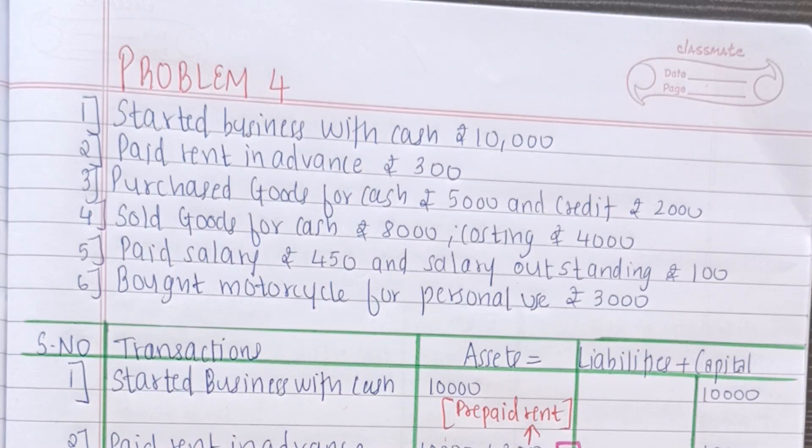Before this I have solved three problems. So this problem is quite different from the ones I have solved previously. Let's begin. The first transaction is started business with cash 10,000. So this 10,000 will be recorded on both sides, asset as well as capital.